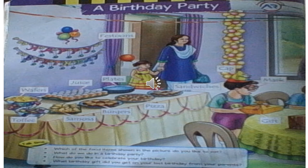What can we see on the table, children? On the table are some eatables for the party. There are plates kept and juice, wafers, toffee, samosa, burger and pizza. Isn't that a very happy moment to be a part of such a joyous celebration?